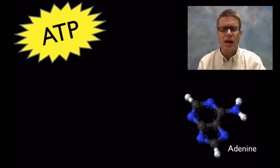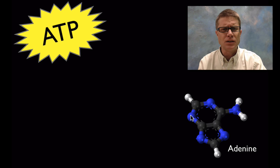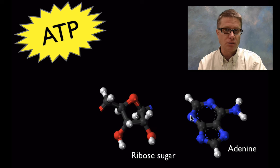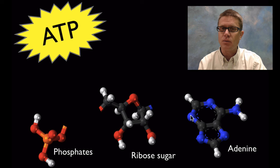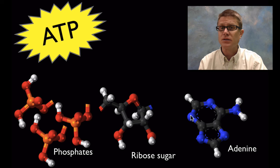So let's begin with the adenine. Adenine is a purine and a nitrogenous base — the black represents carbon and the blue represents nitrogen. Nitrogenous bases are the rungs found on the inside of DNA. We also have a ribose sugar, and then we have not one but three phosphate groups — phosphate being phosphorus surrounded by oxygen.